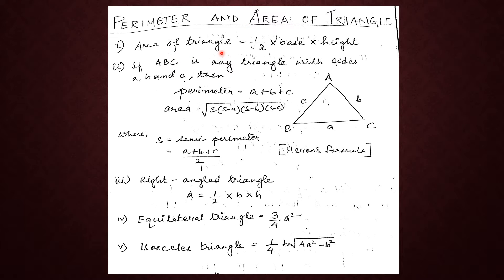First we have the area of a triangle with a base and a height, so the formula is half into base into height. Similarly, if you have a scalene triangle — a triangle where all three sides are different — you can use Heron's formula to solve the sum.